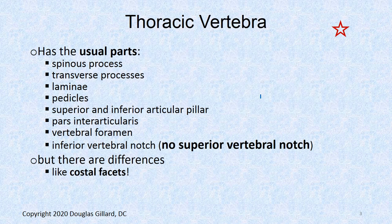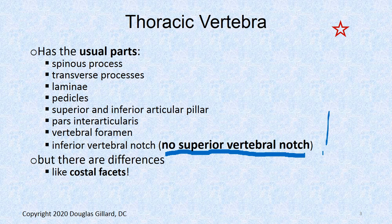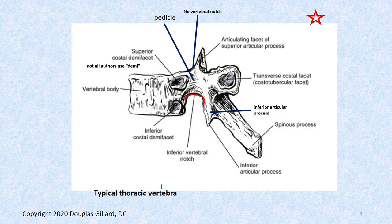Thoracic vertebra — we'll start with that. We're very familiar with these parts already. There's a couple differences I'll point out. A weird thing about thoracic vertebrae — most of them anyway — there's no superior vertebral notch. That's crazy.